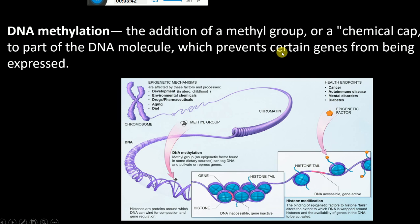Looking at this picture, we have a chromosome and chromatin. When this methyl group — the epigenetic factor — is added to the DNA, it can in some cases activate genes and in other cases repress them. This is how it regulates gene expression. This methyl group can come from dietary sources, for example.